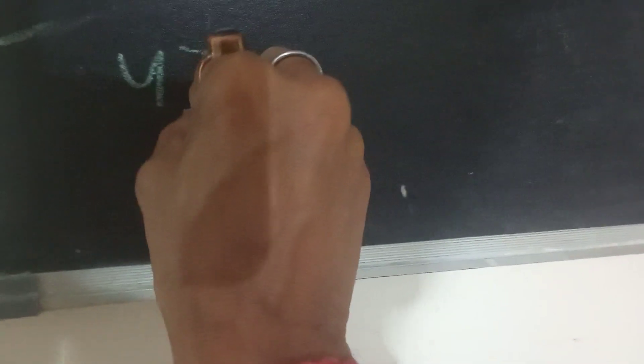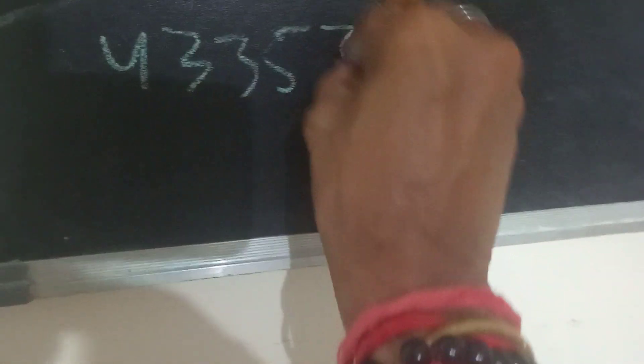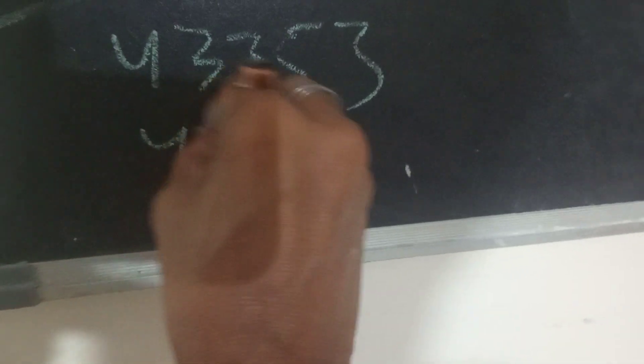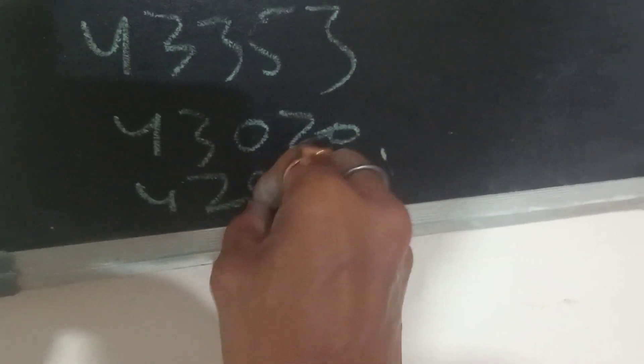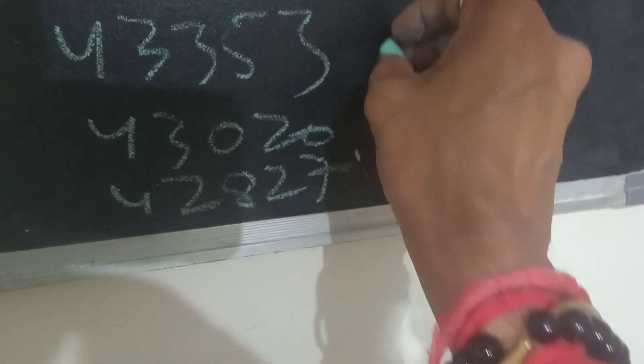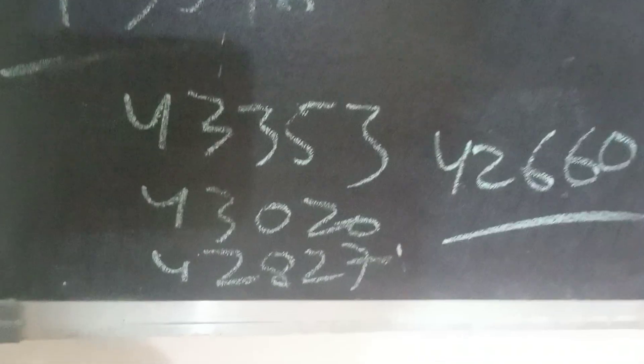If this is the base, then the support levels are: first support is 43,003, second support is 43,020, third support is 42,827, and fourth support is 42,660. This is Nifty Bank's predictions.